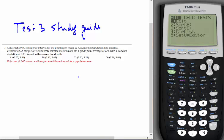In this video I'm going to walk you through the solutions to the problems in Test 3 study guide. We're going to begin with a confidence interval problem. Construct a 90% confidence interval for the population mean.